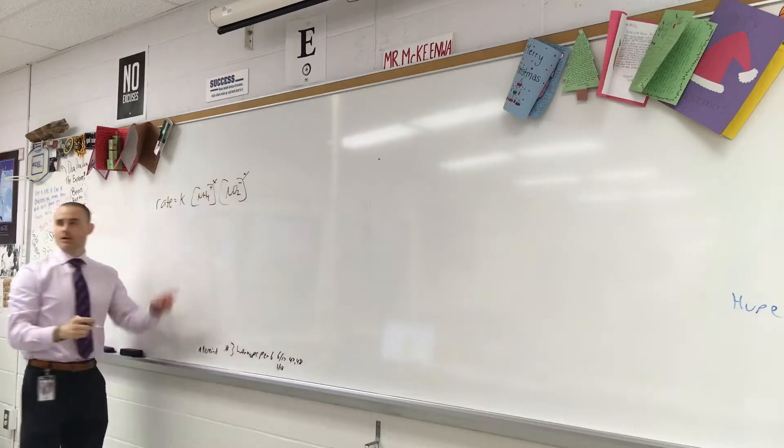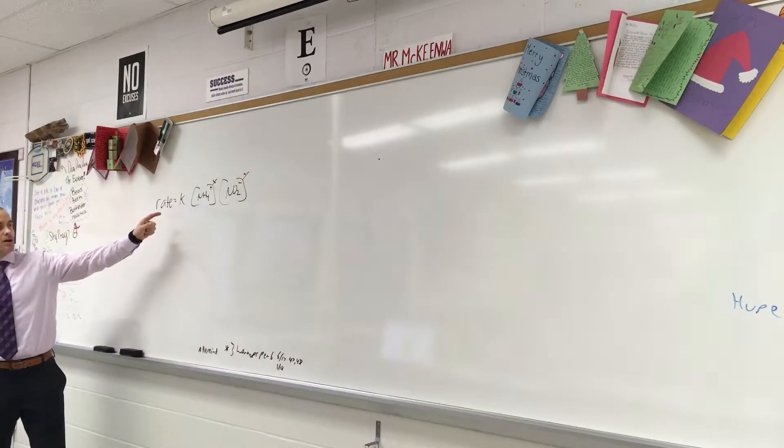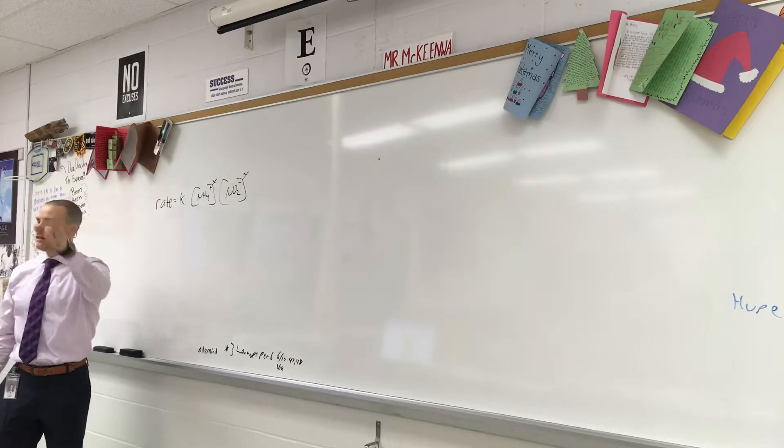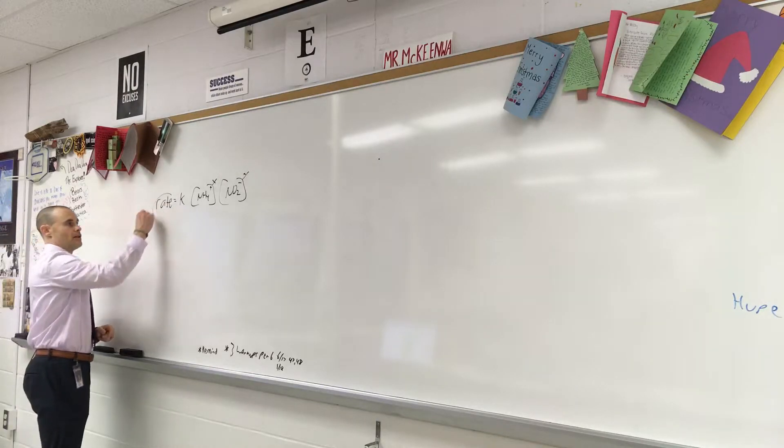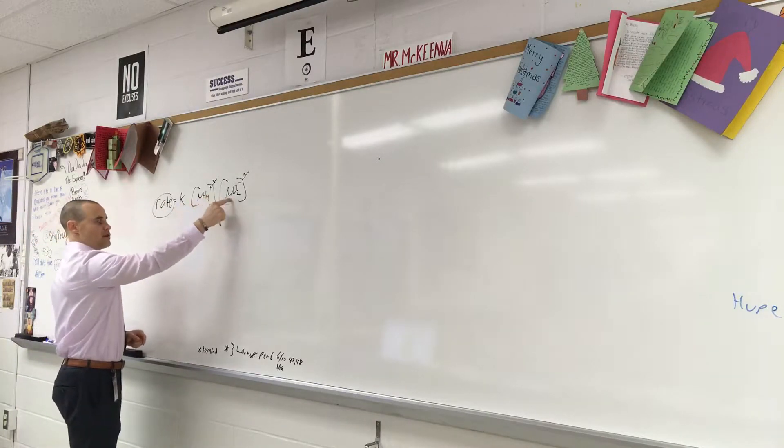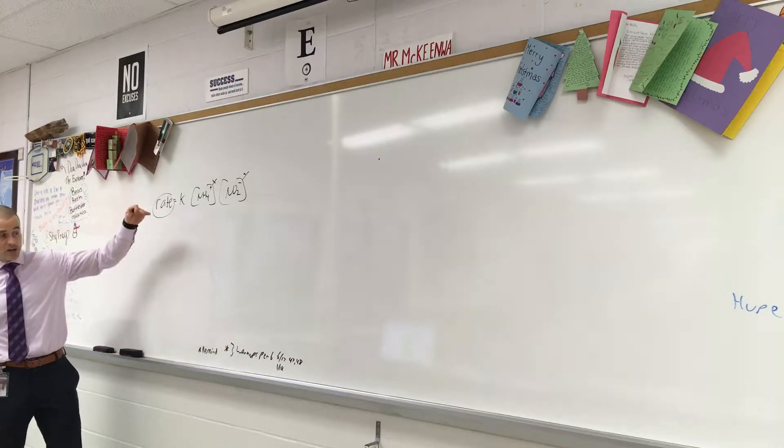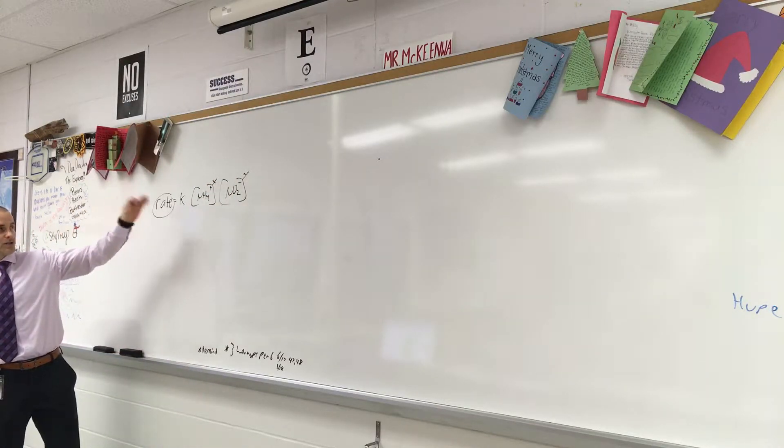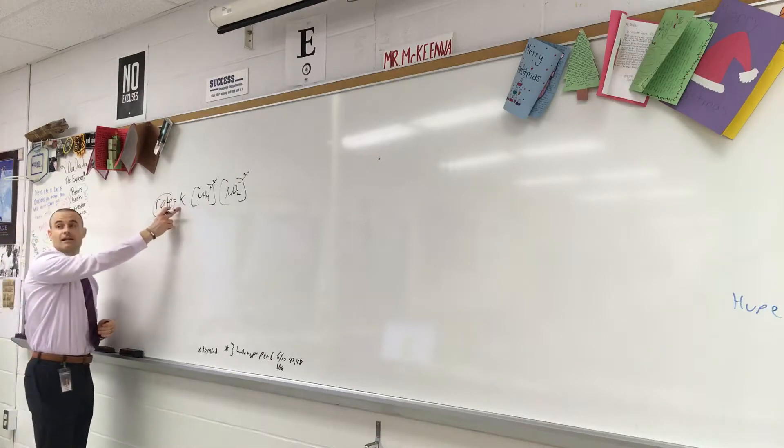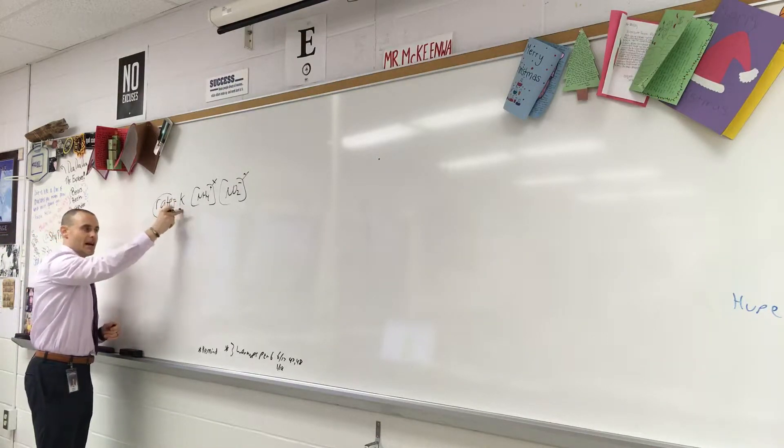So there's your generic rate law. We are using the data they give us. We're going to plug in the rate. We're going to plug in the concentrations, and it's going to solve for the exponents. We already did one of them. I'm going to redo the exact same thing just to make sure you get it. This number is constant.